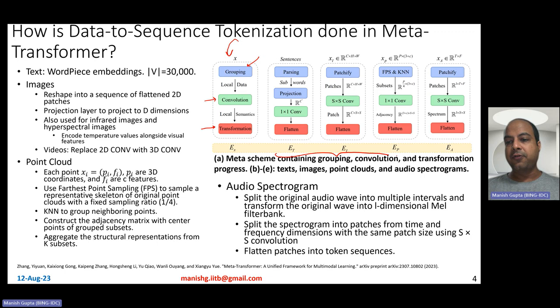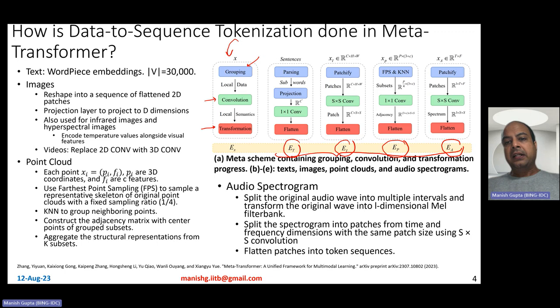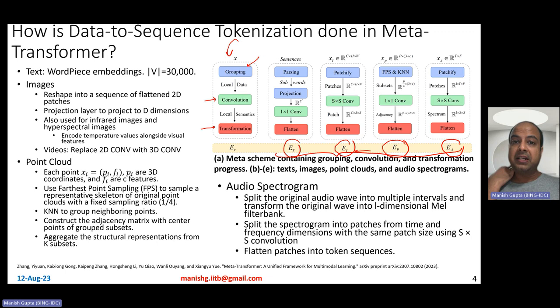Four modality types are shown specifically: text, images, point clouds, and audio, because many other modalities can be expressed in terms of these four. For example, infrared images are processed like typical images, and videos can be thought of as multiple images combined. Text is processed using word piece embeddings with a vocabulary size of 30,000.